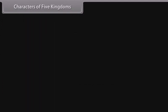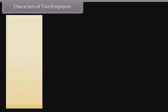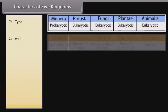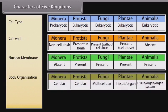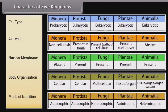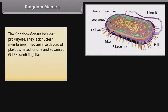Characters of five kingdoms include cell type, cell wall, nuclear membrane, body organization, and mode of nutrition. Kingdom Monera includes prokaryotes. They lack nuclear membranes and are devoid of plastids, mitochondria, and advanced 9+2 strand flagella. Monera cells are microscopic.